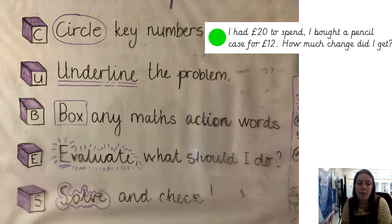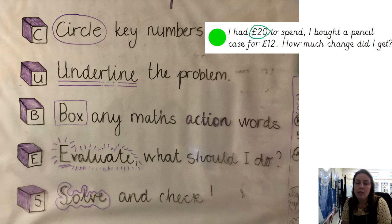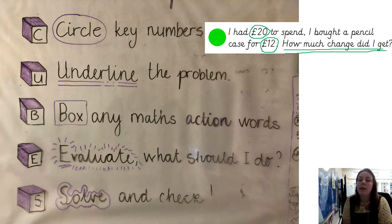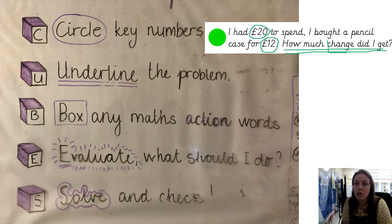Next one is the green problem. Straight away I know I need to circle my key numbers. It says: I had 20 pounds to spend, I bought the pencil case for 12 pounds — how much change did I get? I can see that 20 pounds is my key number, as is 12 pounds. I underline the problem: 'how much change did I get?' Change means something has been taken away, so I am using my subtraction knowledge again. Box the maths action word: the word 'change'.